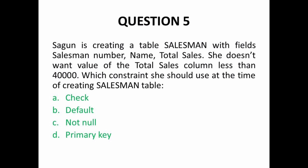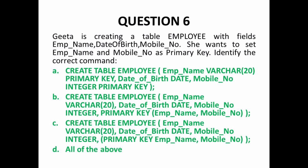Next MCQ: Shagun is creating a salesman table with fields salesman_number, total_sales, and name. She does not want the value of total_sales to be less than 40,000. Which constraint should she use? If we need to specify that a column's value must be within a certain range — not greater or not less than a value — then we use CHECK constraint. So option A is the correct answer.